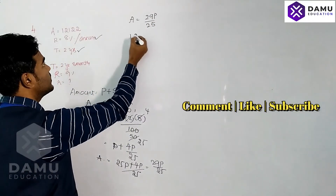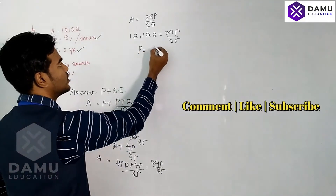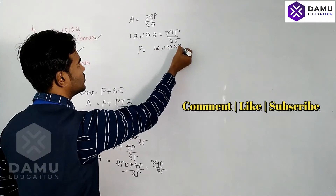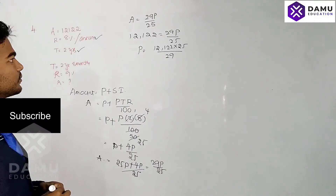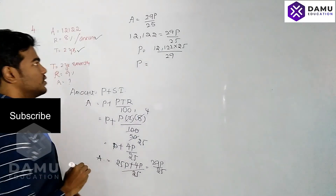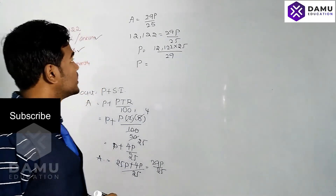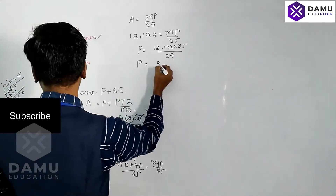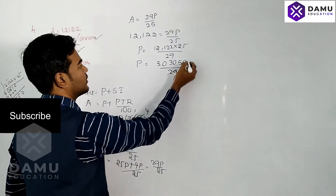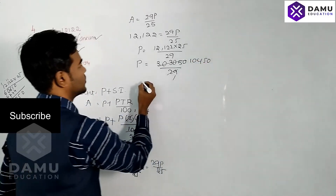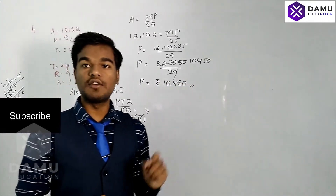The amount is given as 12,122 rupees, so 12,122 = 29P/25. Therefore, Principal P = 12,122 × 25/29. Calculating: 12,122 × 25 = 3,03,050, divided by 29 gives 10,450. So the principal is 10,450 rupees.